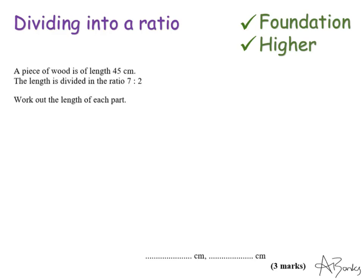When we're given a ratio to divide something into, we're basically saying that one part of, in this example, this piece of wood, has to be 7 centimeters long for every 2 centimeters that the other part is. So 7 and 2 is in the ratio 7 to 2.